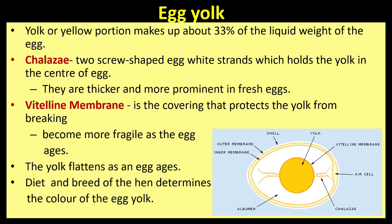Egg yolk is the yellow portion and makes up about 33% of the liquid weight of the egg. Chalaza are two screw-shaped egg white strands which hold the yolk in the center of the egg; they are thicker and more prominent in fresh eggs.